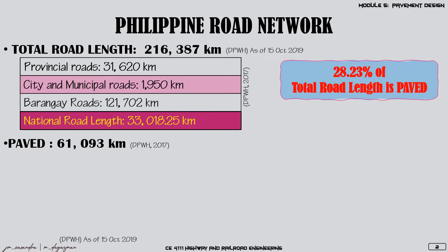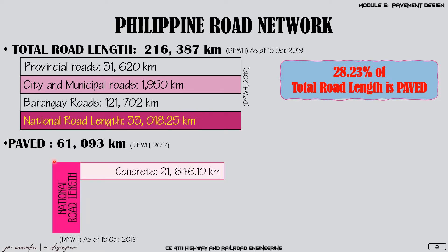If we observe, in the 61,093 kilometers that are paved in our road network, most likely the national road is already included in this number. Looking at the national road data, 21,646.1 kilometers is already concreted or paved with concrete, and 10,440.98 kilometers is asphalt road, which together constitute our paved roads.